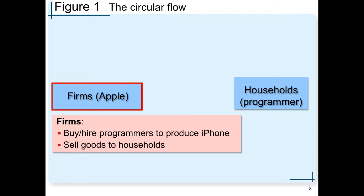To fix the idea, we can think of the only firm or company in the model as being an Apple company, and we can think of the only household in the economy as a computer programmer. What happens in the economy is that the company, Apple, hires computer programmers to produce iPhones. After iPhones are produced, they're going to sell iPhones back to consumers, which are computer programmers.